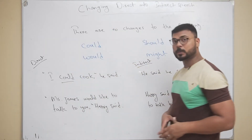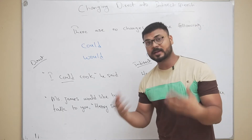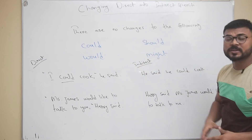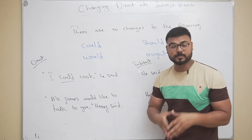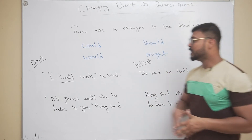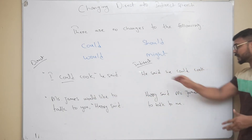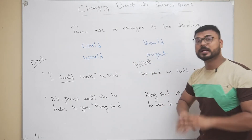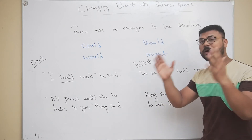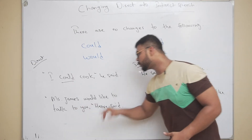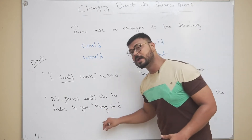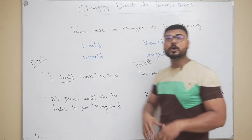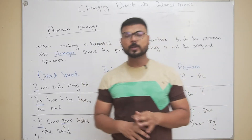Now, some modals have no changes when converted from direct to indirect speech. These include: could, would, should, and might. For example: 'I could cook,' he said — stays: he said he could cook. Another example: 'Mr. James would like to talk to you,' Harry said — becomes: Harry said Mr. James would like to talk to me. No changes.